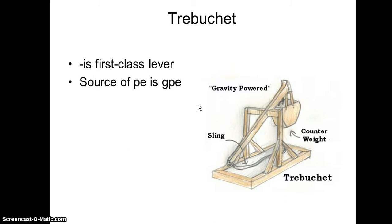The source of energy for the trebuchet is gravitational potential energy. It's the counterweight pulling down that's going to cause the trebuchet to move.